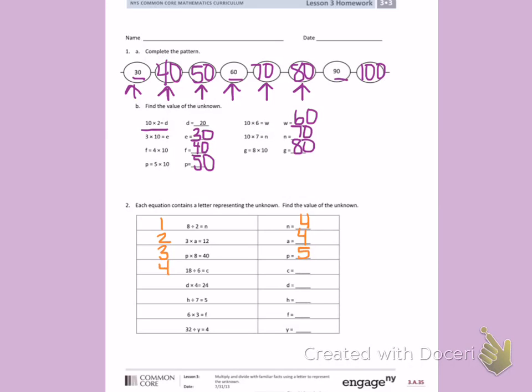Fourth, 18 divided by 6 equals C. I'm going to count by 6's until I get to 18. 6, 12, 18. C equals 3. When you're counting with me, make sure your fingers are out.